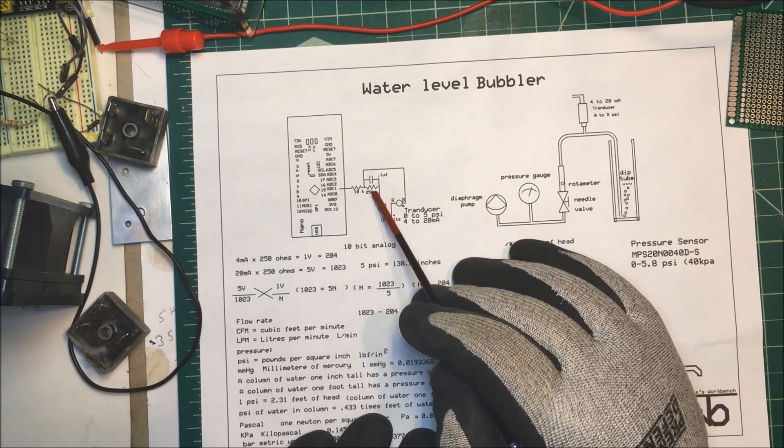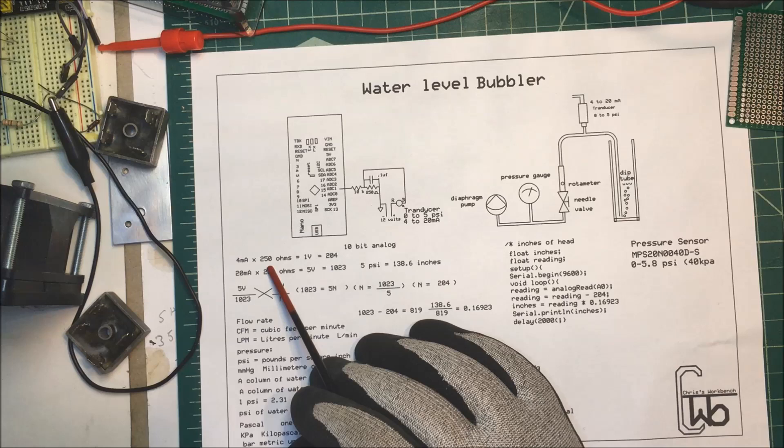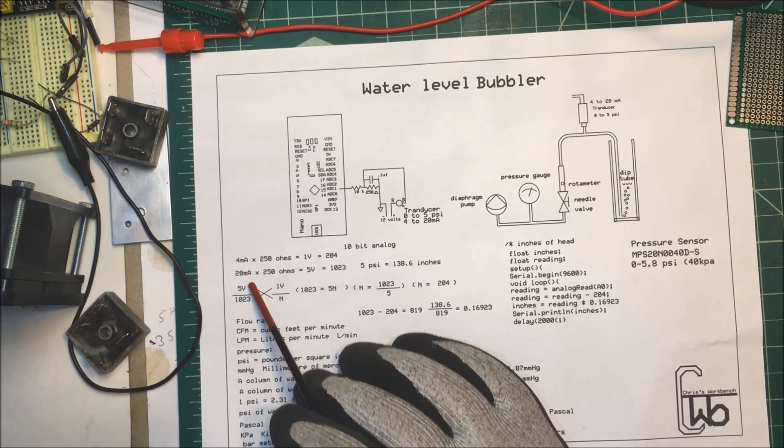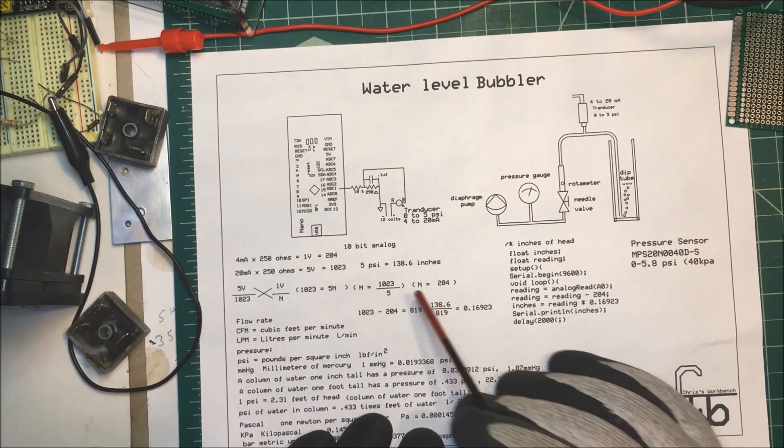Now, if I put four milliamps into a 250 ohm resistor, I get one volt out. And if I use 20 milliamps into 250 ohm resistor, I get five volts.